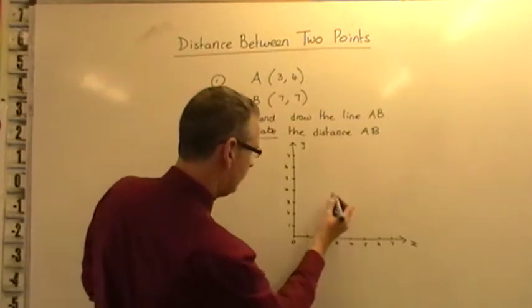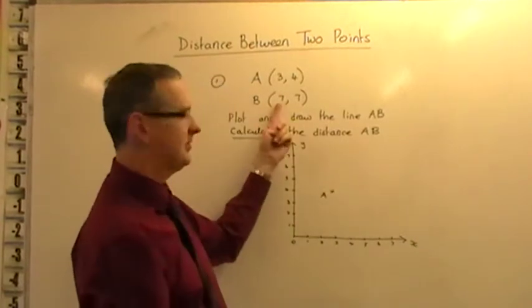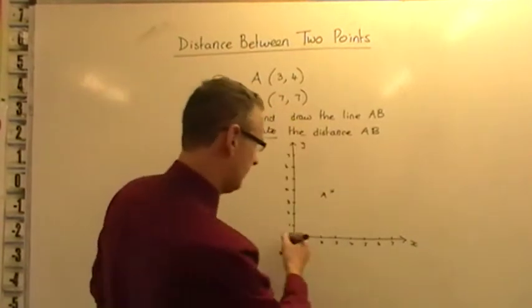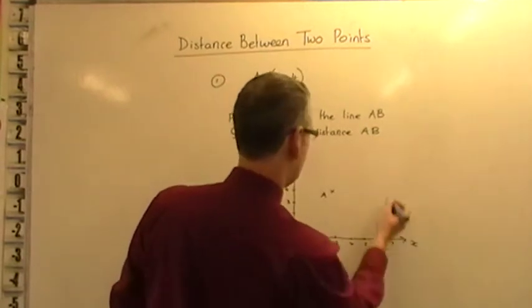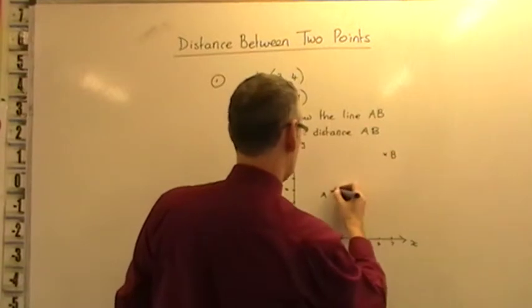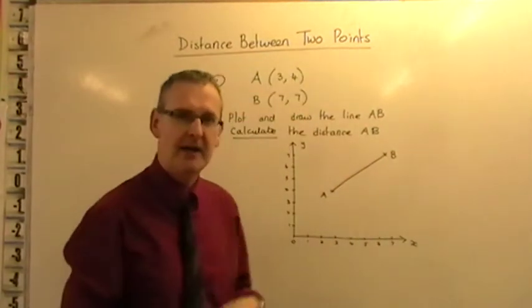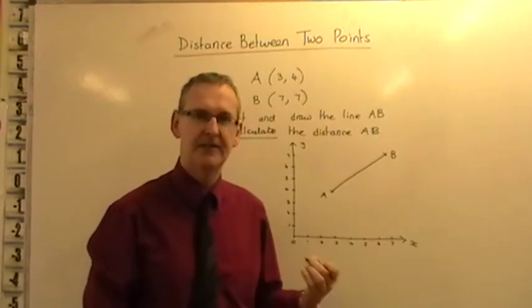And then on the same sort of scale, let's go up to 7 on the Y axis. And then I'm going to plot (3,4), so 3 across, 4 up, that's point A. And then I'm going to plot B, which is (7,7). So 7 across and 7 up, that's way up there, that's point B. You need to join them up to get the line AB. And our job is to calculate the length of that line.